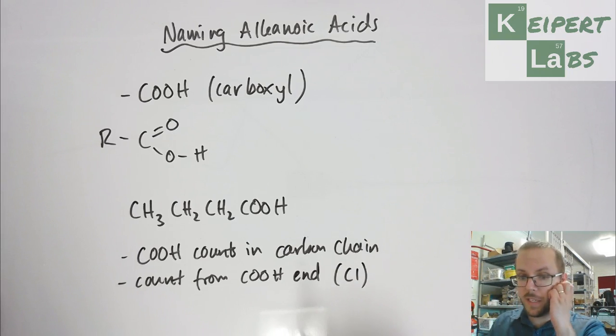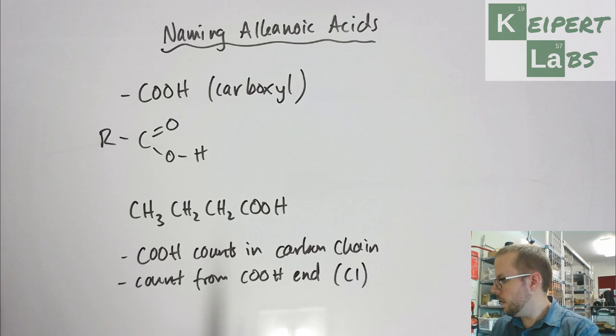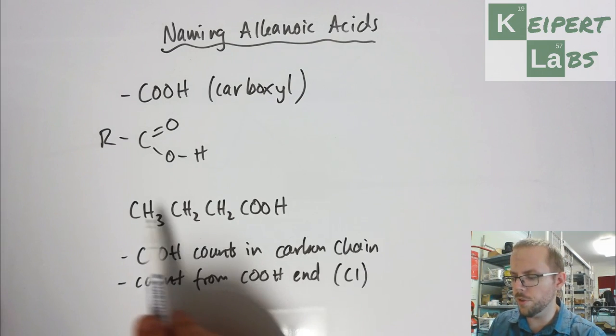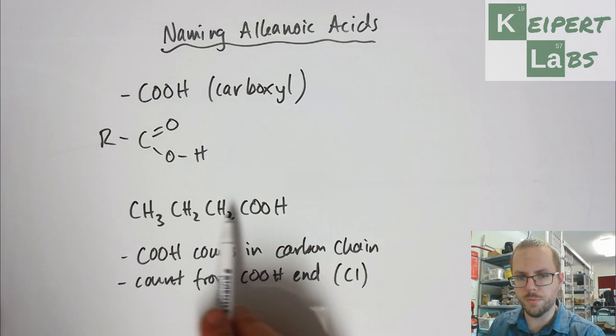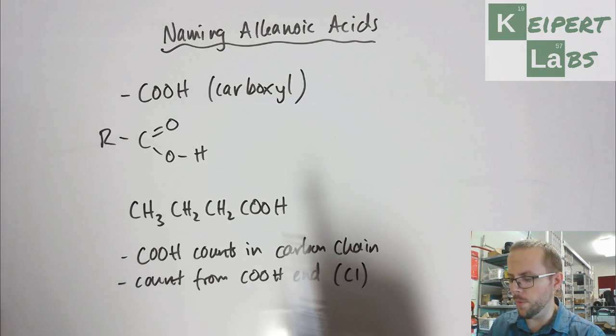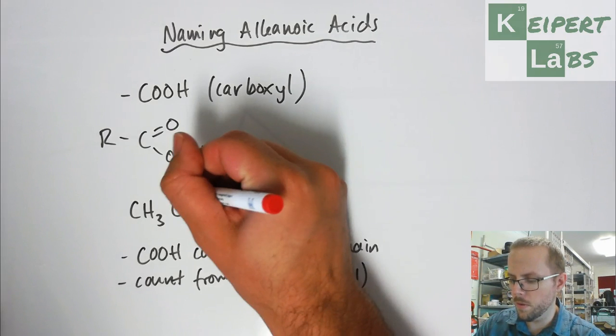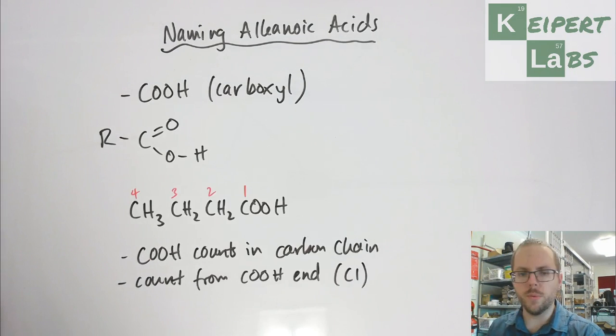When we're looking at this particular substance, we've got four carbons: one, two, three, and four. This one counts in our carbon chain, and we're going to number from this end. So that would be our numbering.